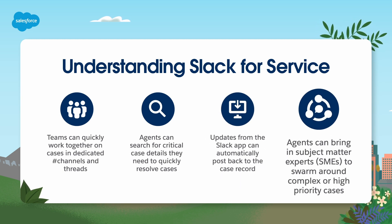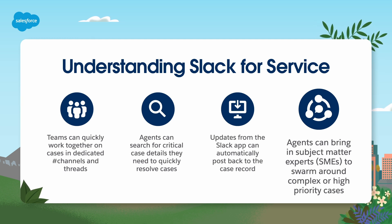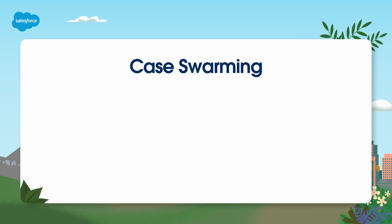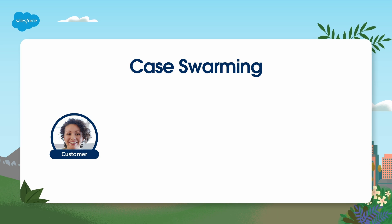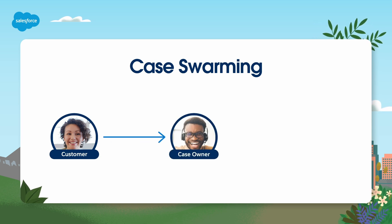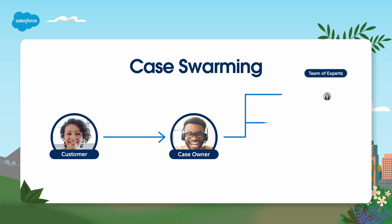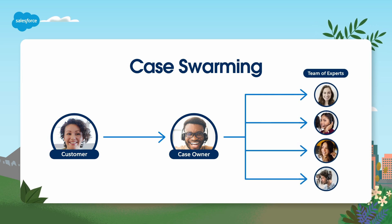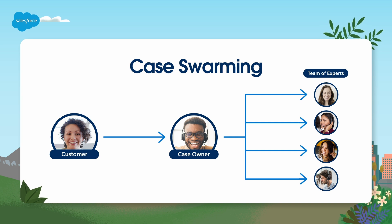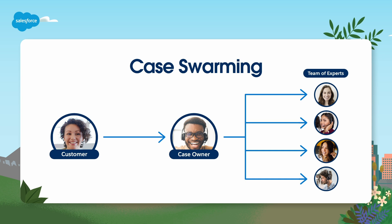One of the most critical features of Slack for Service is the introduction of case swarming. This is a way for agents to bring in subject matter experts to swarm a high-priority or complex case. With the swarming model, the customer has a single main contact end-to-end and sees a faster case resolution. If a roadblock or other problem arises, the case owner can swarm with other team members who bring in the desired skills to help solve the case. Swarming allows multiple support agents to help on high-severity issues, reducing repeat questions to customers and reducing time to resolve.